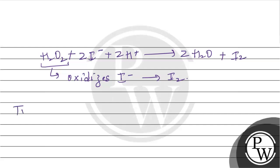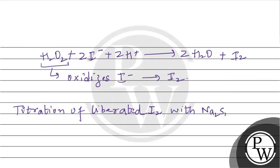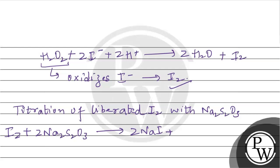Now, we will write the titration reaction — titration of the liberated iodine with sodium thiosulfate. The reaction is: I₂ plus two moles of sodium thiosulfate gives two moles of sodium iodide plus Na₂S₄O₆.